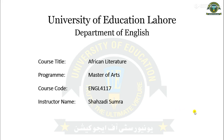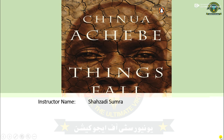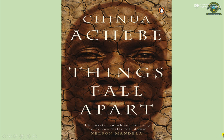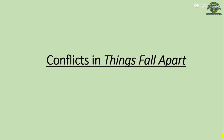Bismillah. Assalamu alaikum. This is African Literature for Masters, course code ENGL4117. I'm Shahzadi Samra. Today we are going to discuss Chinua Achebe's Things Fall Apart — 'the writer in whose company the prison walls fell down.' In the previous three or four lectures we have already discussed many things about Chinua Achebe and his work.